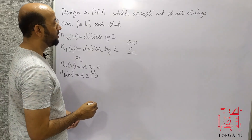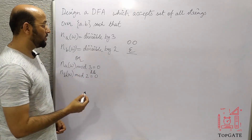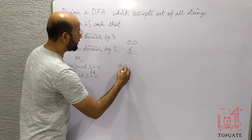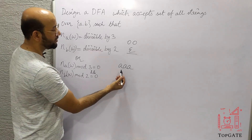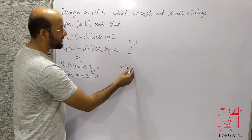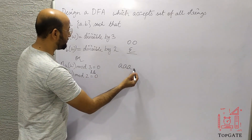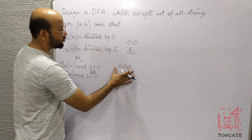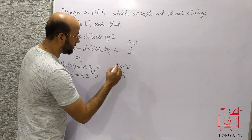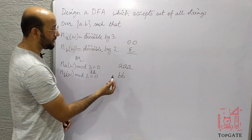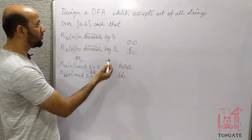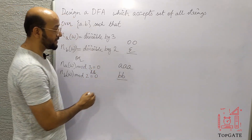Apart from epsilon, the shortest possible string we need to accept is AAA — 3 A's which is divisible by 3, and 0 B's which is a multiple of 3. So this should be accepted. Next, the string BB: it has 2 B's which is divisible by 2, and 0 A's which is a multiple of 3.